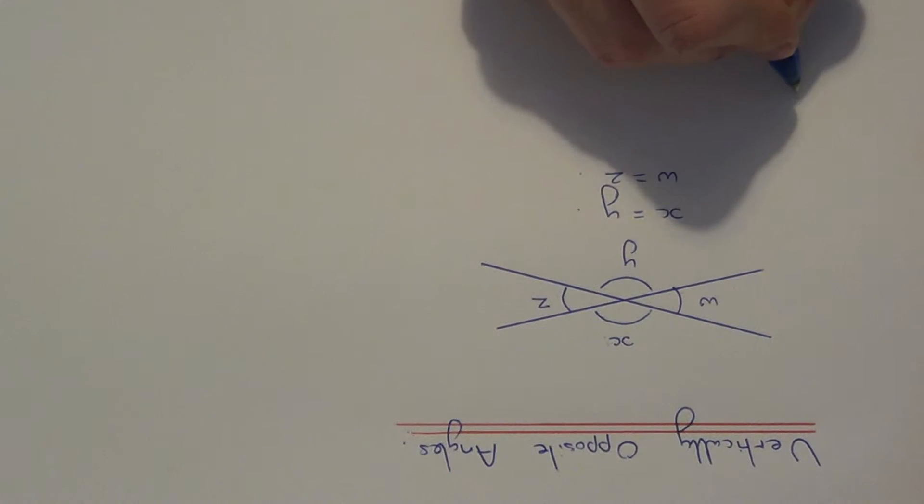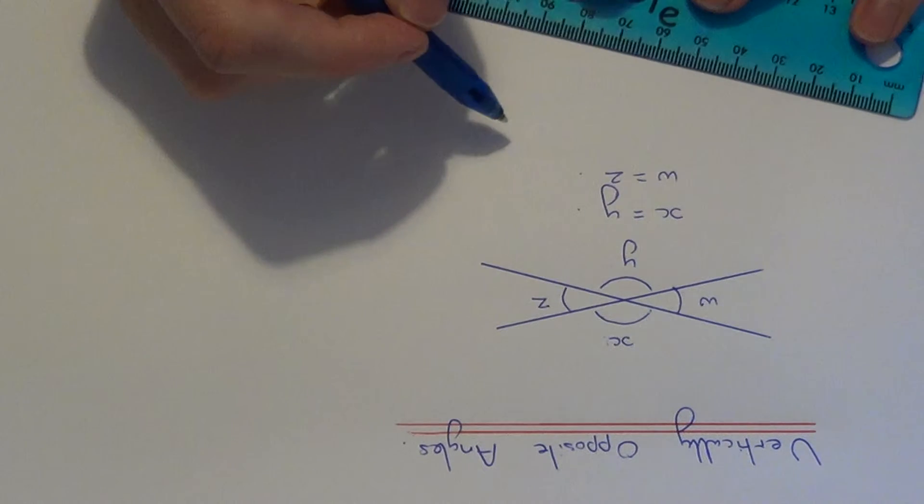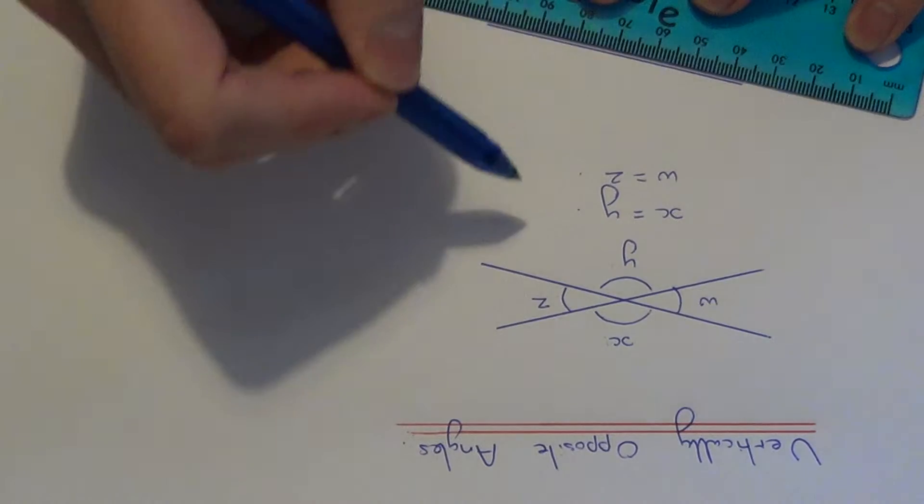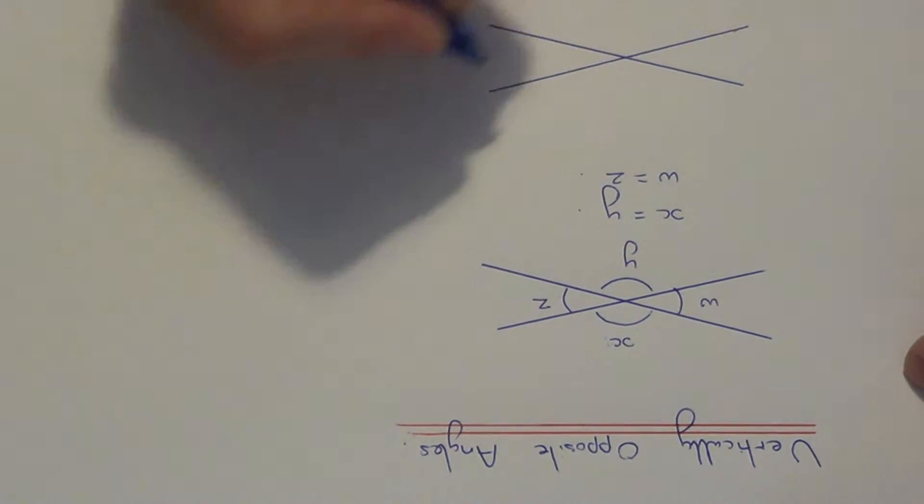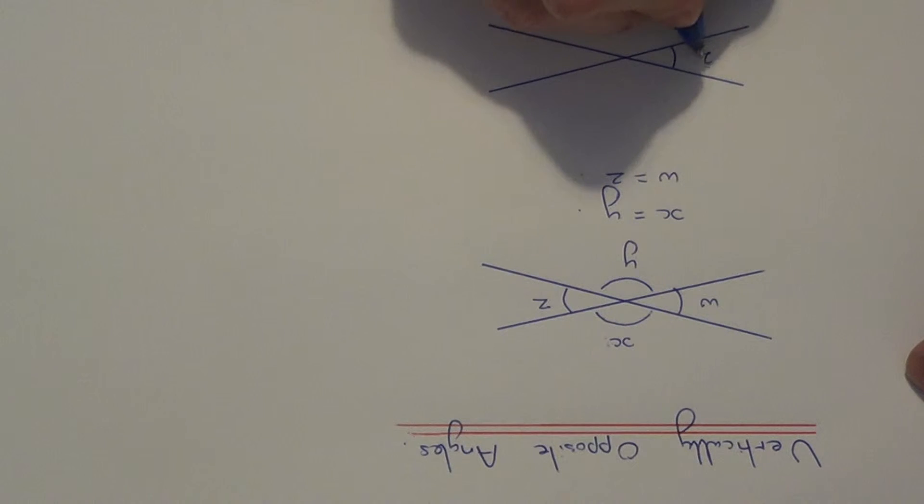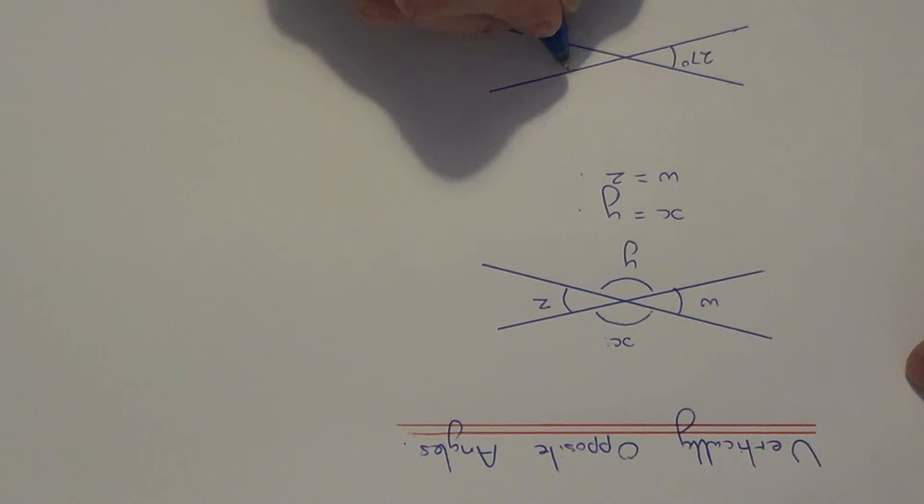So let's do a little example. We've got two lines which intersect, and we've got this angle here which is 27 degrees. And you need to find angle A and angle B and angle C.